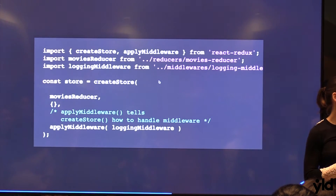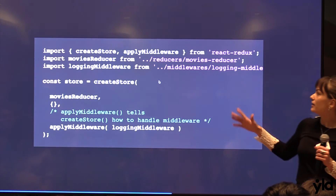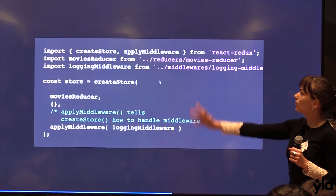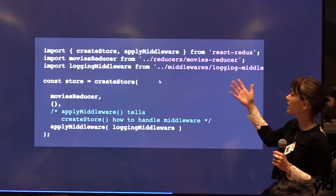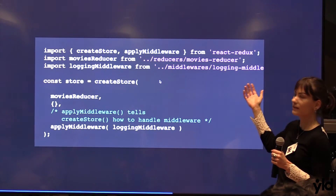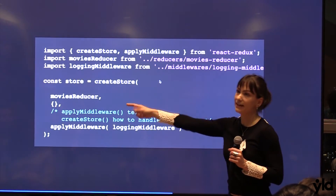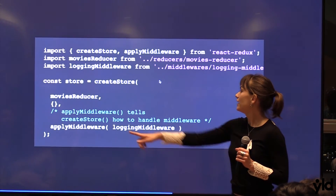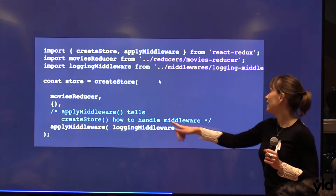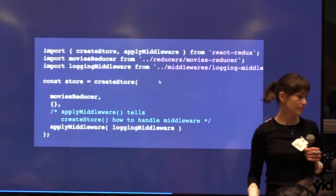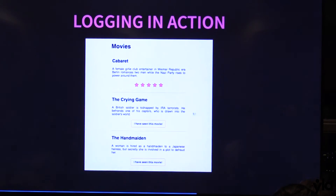Given that middleware is part of the store, this is basically how we define middleware. This is just how we create the store in Redux. We are adding all of our reducers, that's the initial state which we are currently not using, and then we can apply middleware — and we can add as many of these as we like. So let's see it in action.